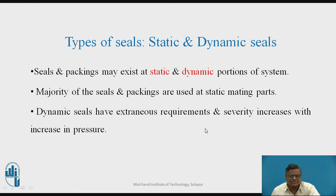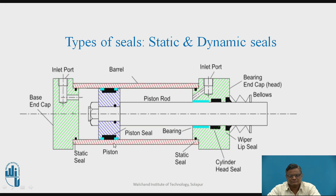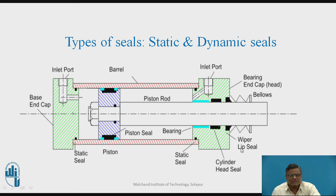Dynamic seals have extraneous requirements and severity increases with the increase in pressure. In this diagram you can observe different types of seals. The end cover and the cylinder have a static seal on both sides. The piston and cylinder have a dynamic seal — the piston seal. At the cylinder head, where the bearings are and relative motion is occurring, a seal remains there. The piston rod comes outside and a wiper seal is also a dynamic seal, as relative motion occurs there. For the static seal, the parts touching it remain stationary with no motion. So static and dynamic are the two types of seals.